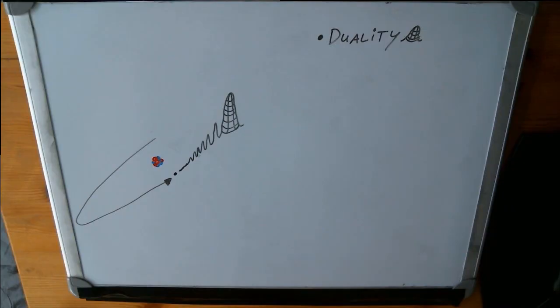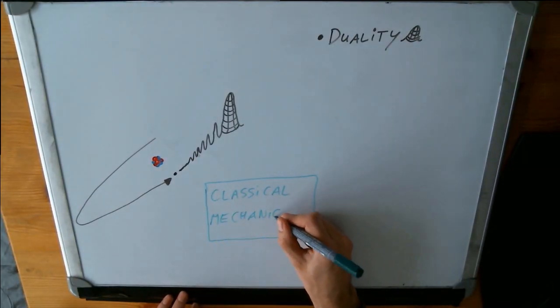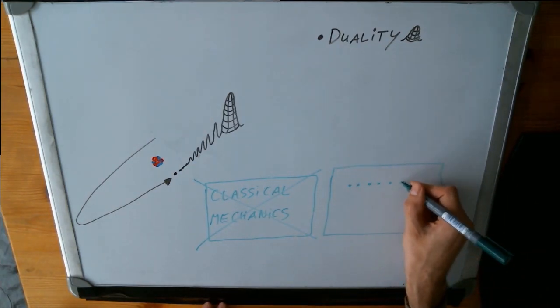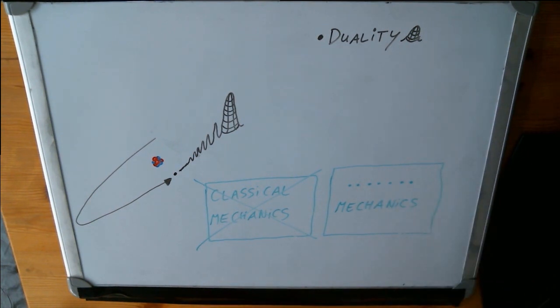But they realized this model couldn't come from classical mechanics, because classical mechanics assumes particles stay particles. In fact, they would need an entirely new mechanics—some new theory that included the wave-like nature of particles. And this is when Schrödinger entered the picture.